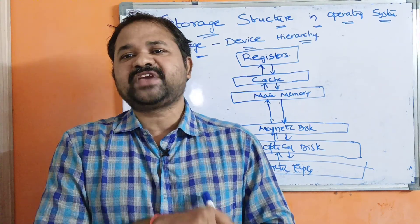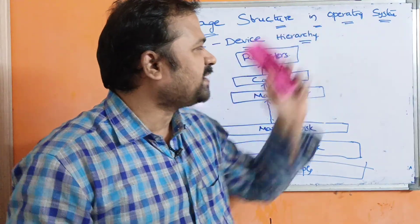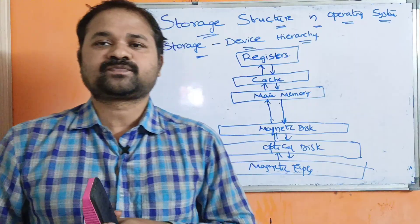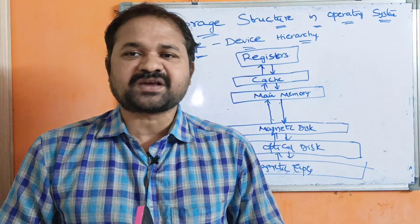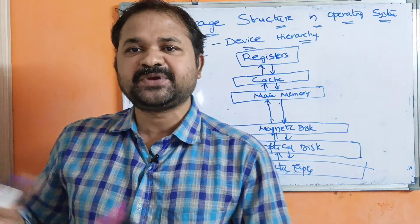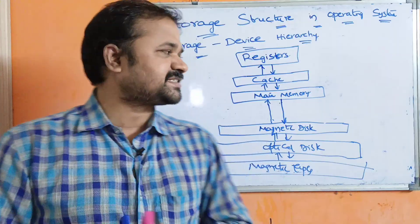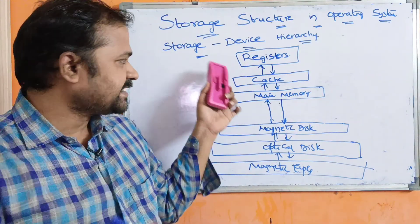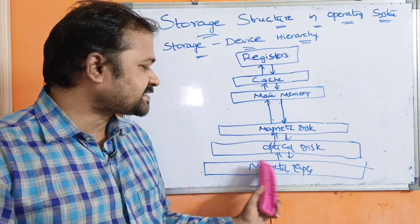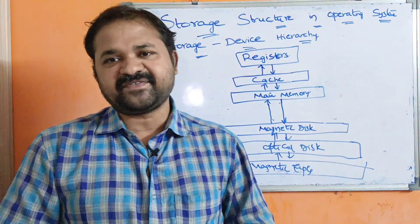In this video, we are going to discuss about storage structures in operating system — that is, storage device hierarchy. Storage devices are mainly useful in order to store information in the computer. We have different types of storage devices such as registers, cache, main memory, magnetic disk, optical disk, and magnetic tape. Now, let us see about all these devices one by one.